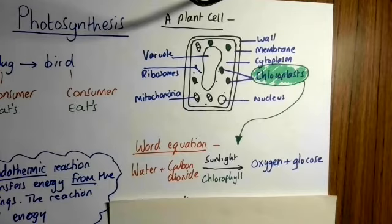In order for that energy to be utilized, though, we need something called chlorophyll. And chlorophyll is a green pigment that we find inside chloroplasts, and it's what makes plants look green.